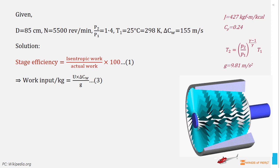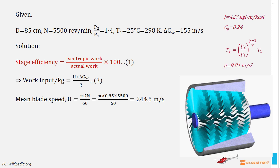It depends on the speed of rotation of blade. Blade speed depends on the blade diameter. Then write, U is equal to pi into D into N divided by 60. Now substitute blade diameter D and speed of rotation N values and solve, we get mean blade speed U is equal to 244.5 meter per second.